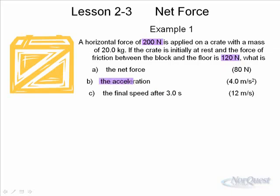The acceleration is found using Newton's second law. If the net force is 80 Newtons and you divide by the mass — because a equals F net over m — then 80 divided by the mass of 20 gives you an acceleration of 4 meters per second squared. The final speed after 3 seconds can be found using kinematics. Since the initial velocity is zero, acceleration is 4, and time is 3 seconds, the final speed is 12 meters per second.